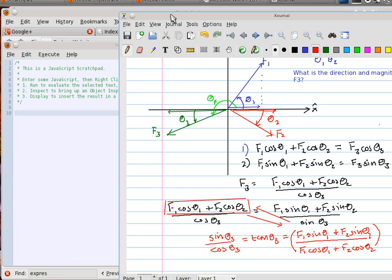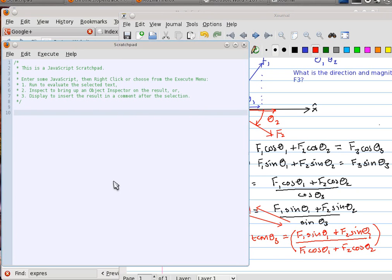So now we're at a point where we actually can use Scratchpad. Let's assign some numbers. Let's just say that F1 is equal to 10 newtons. We can't put units there. We might put a comment there with units. F2 equals 20 newtons. Theta1 equals 60 degrees. Theta2 equals 30 degrees. Now, those are our givens.